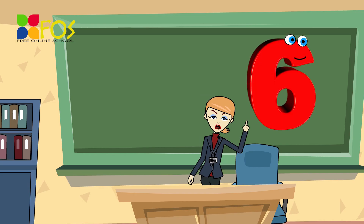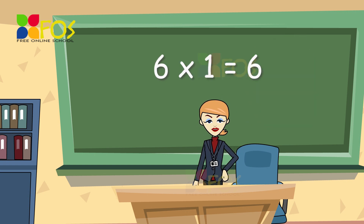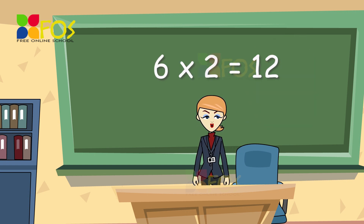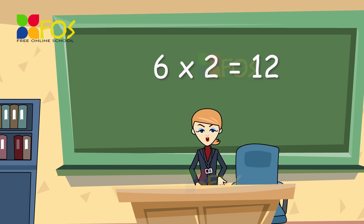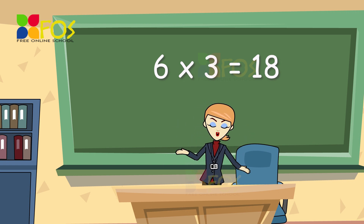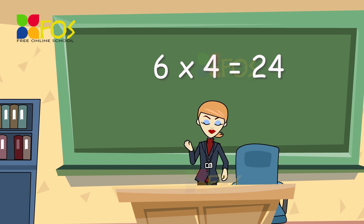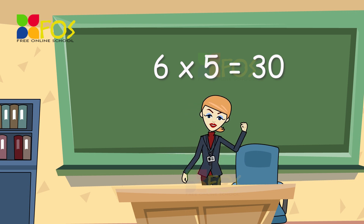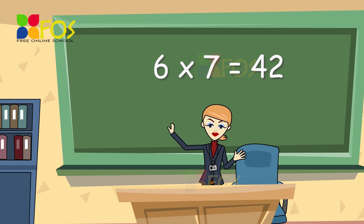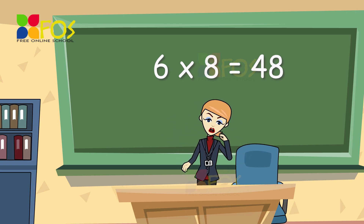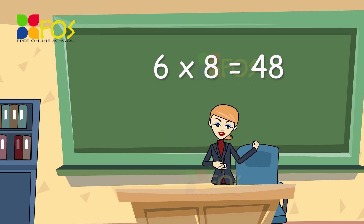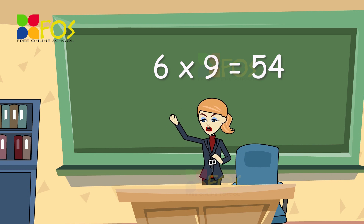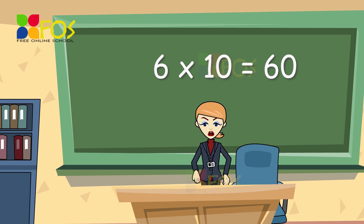Here is the table of six. Six ones are six. Six twos are twelve. Six threes are eighteen. Six fours are twenty-four. Six fives are thirty. Six sixes are thirty-six. Six sevens are forty-two. Six eights are forty-eight. Six nines are fifty-four. Six tens are sixty.